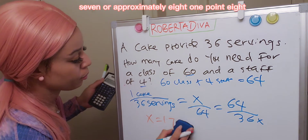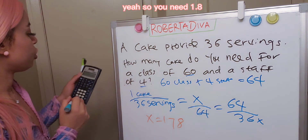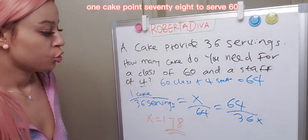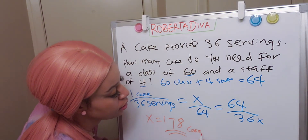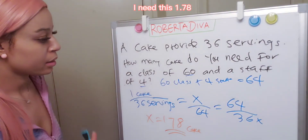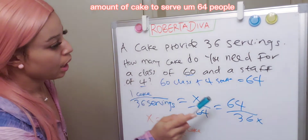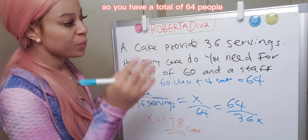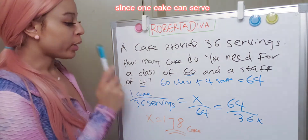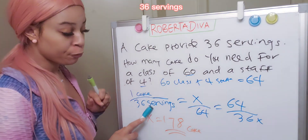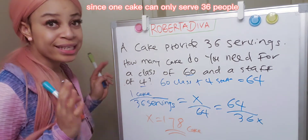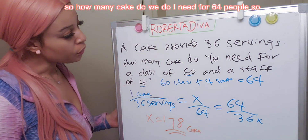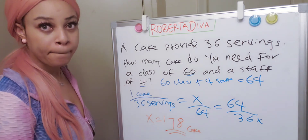Approximately 1.78 cakes. So you need 1.78 cakes to serve 64 people. That's the answer. Let me go through it again: we have a total of 64 people who want to eat the cake. Since one cake can only serve 36 people, we need 1.78 cakes for 64 people. That's it.